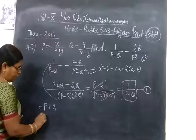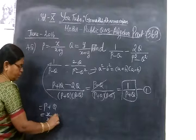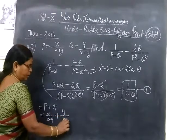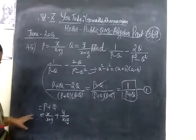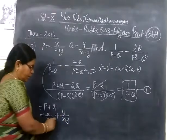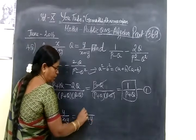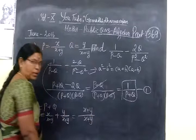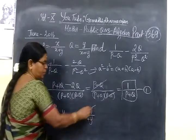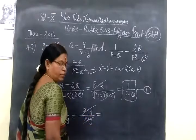We now substitute x/(x+y) plus y/(x+y). Since the denominator is the same, you can directly add the numerators. So x plus y over x plus y. Here x+y in the numerator and x+y in the denominator, so x+y cancels.